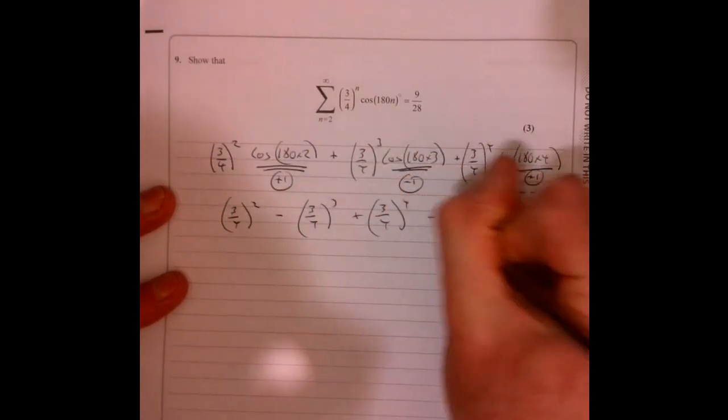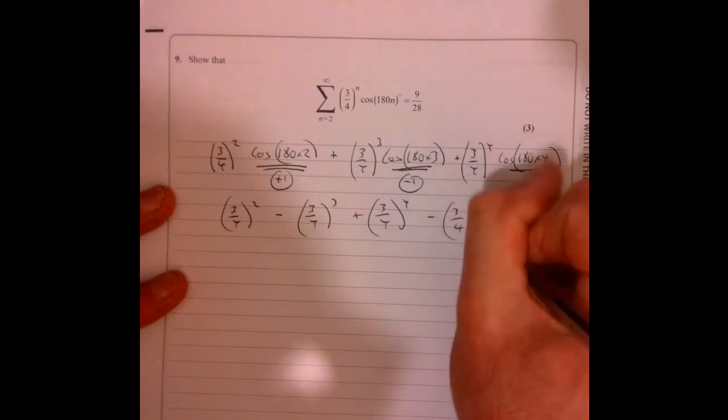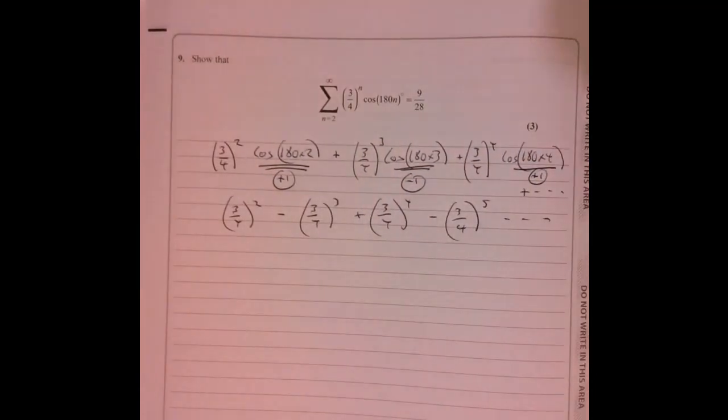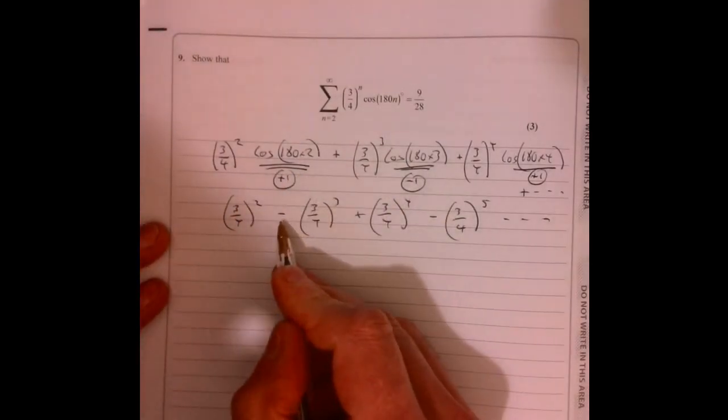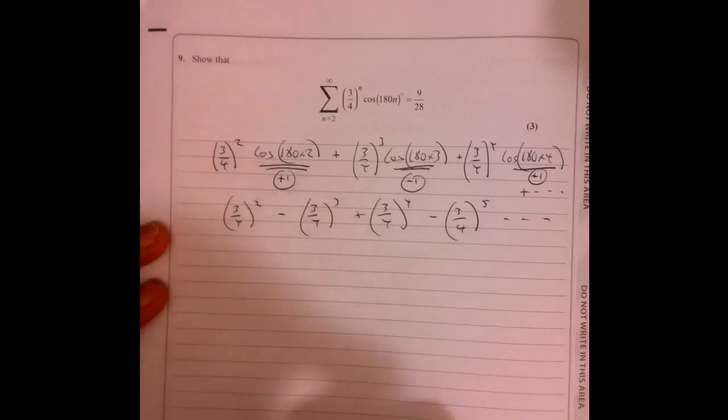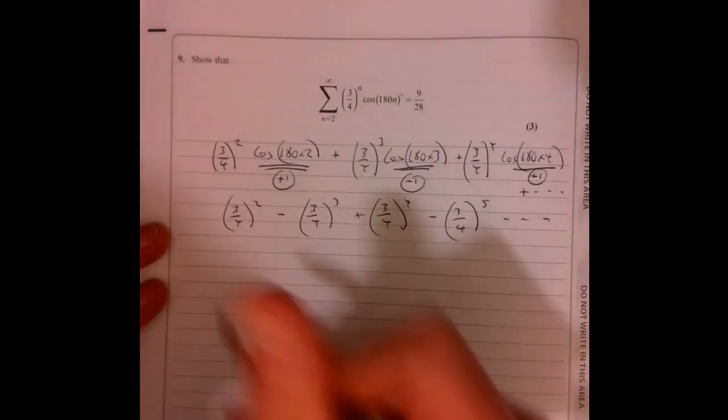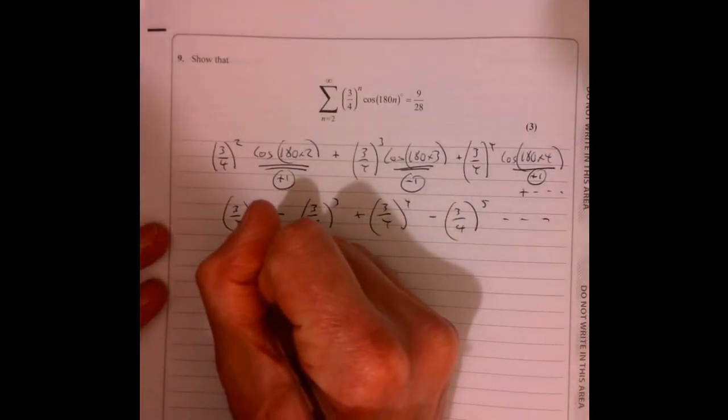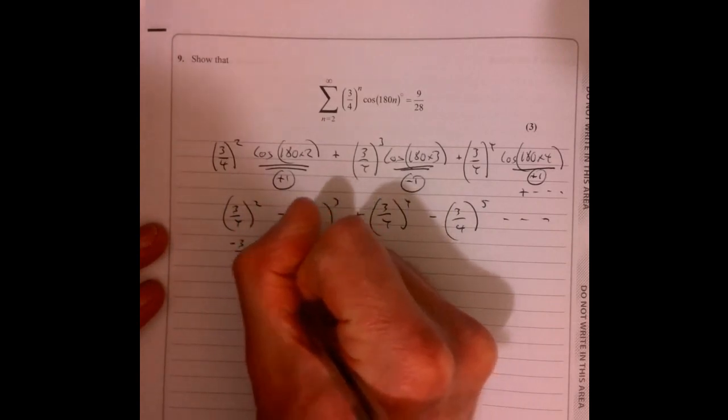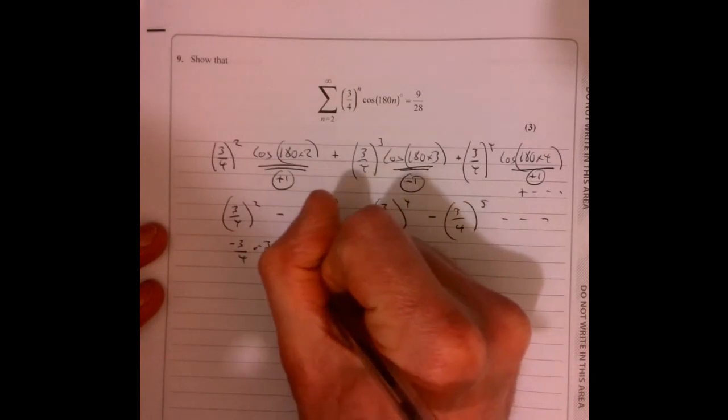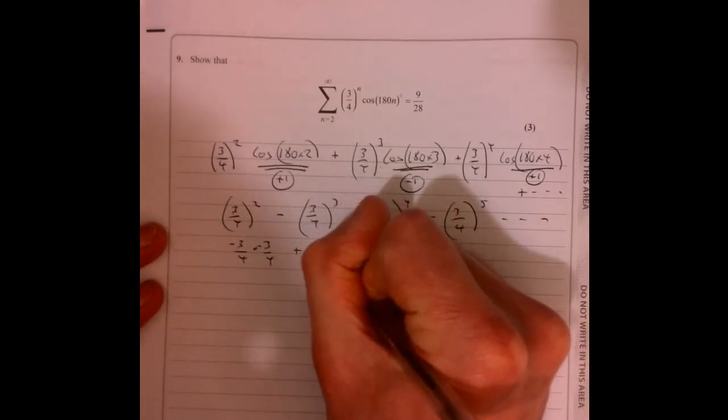And then we take away the next one and so on. Okay, so what's really happening? Well think about it, how do we get this change of sign each time? So it's being multiplied by minus three over four. So it's minus three over four, that's minus three over four, plus minus three over four.